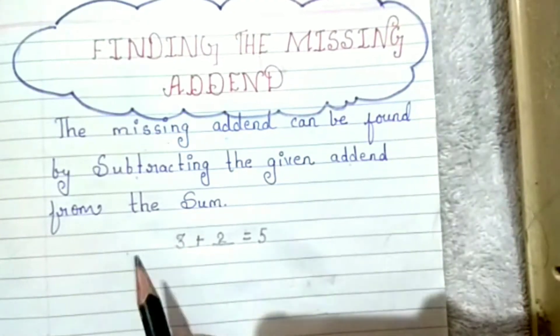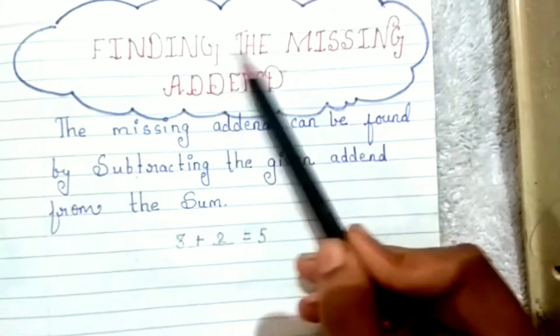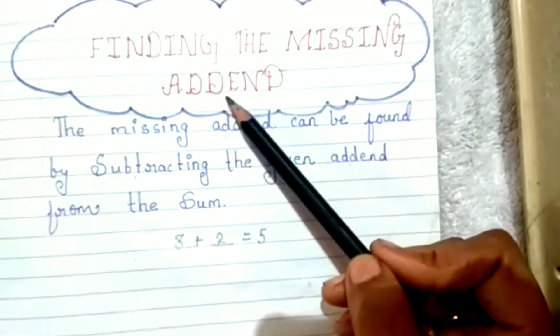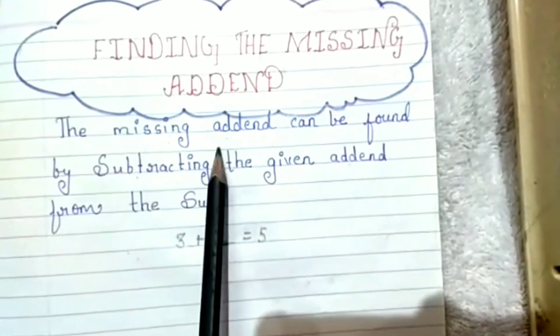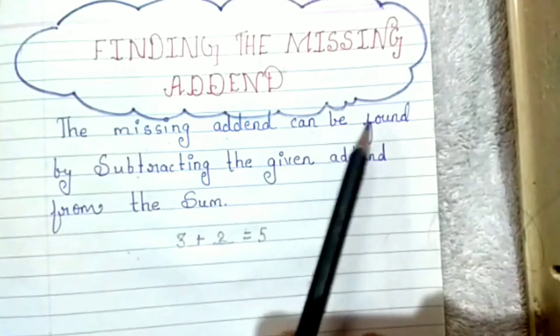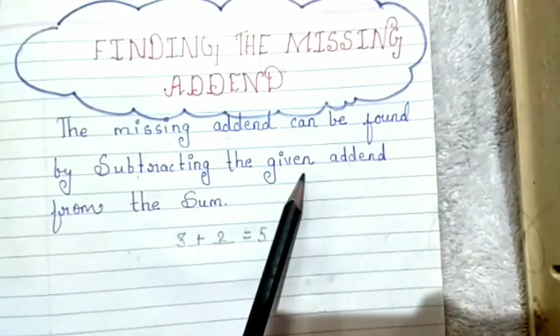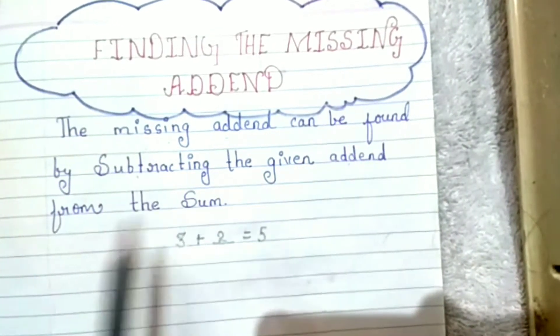Good morning students. Today's topic is finding the missing addend. The missing addend can be found by subtracting the given addend from the sum.